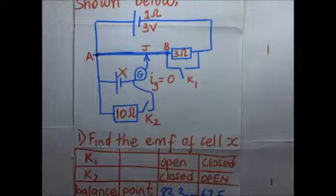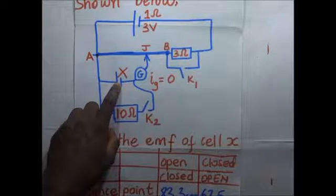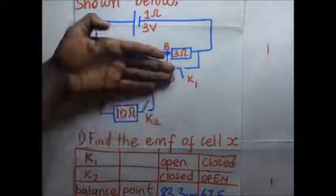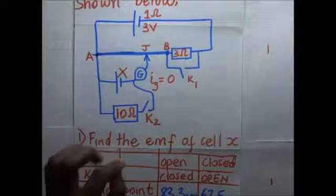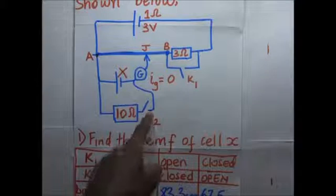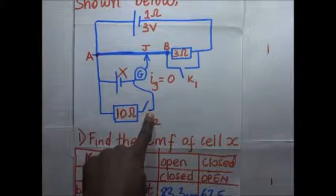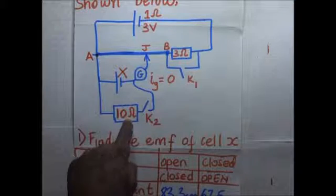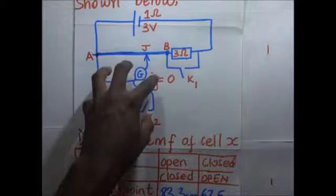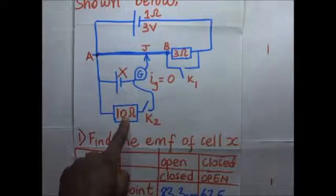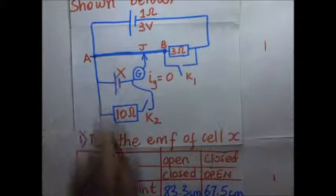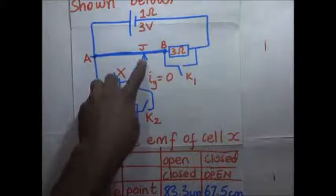This is the cell in the secondary circuit. When switch k2 is open, the secondary circuit is incomplete and we calculate as though that cell is not in the circuit. But if switch k2 is closed, the 10-ohm resistor comes into the circuit, so our calculations relating to the secondary circuit will have to consider that as well. Now to find the EMF of cell X, first of all we know we are going to move this jockey.